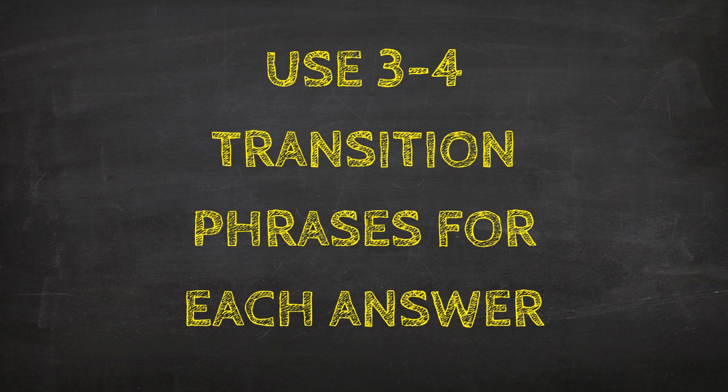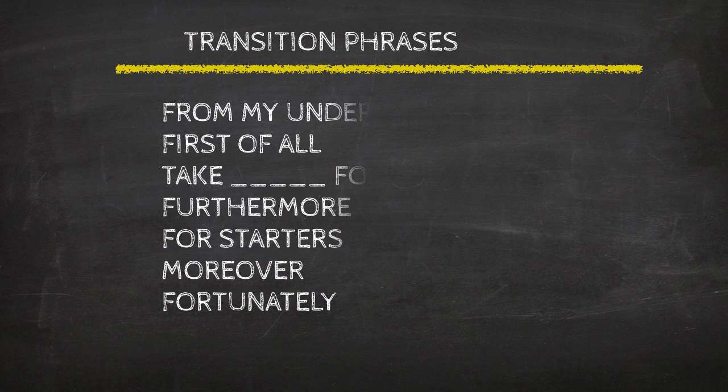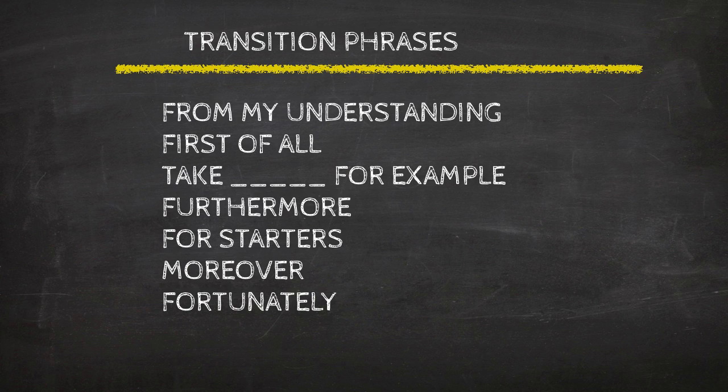Use 3 to 4 transition phrases for each answer. Now, this is very important. If you use transition phrases in part 3, it shows that your answer has structure. Also, it makes your answer more formal. You should try to speak in a formal way in part 3. There are so many transition phrases to choose from. You should try to have 3 or 4 in every answer in part 3. These are some of my favorites: From my understanding, first of all, take something for example, furthermore, for starters, moreover, fortunately.